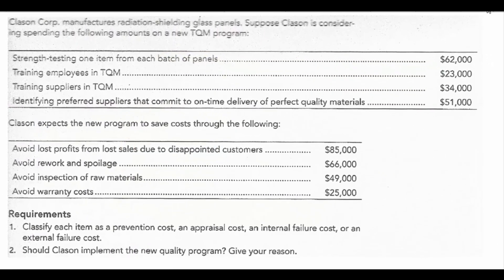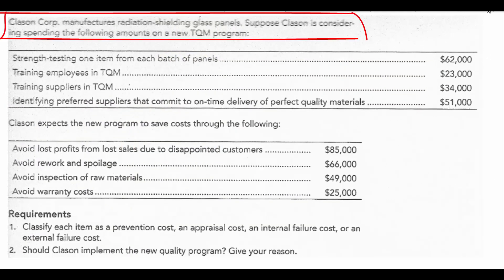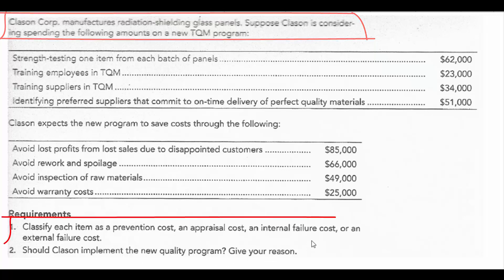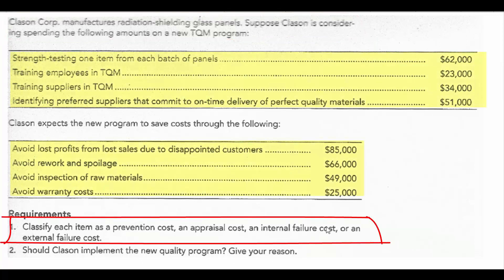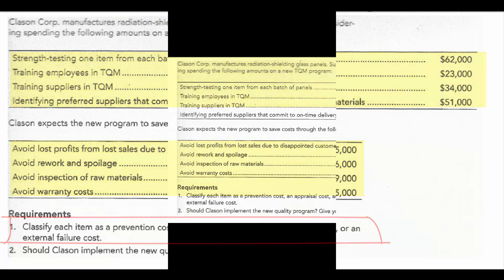Let's do this problem together about Kloss & Korp. They manufacture radiation shielding glass panels. The first thing the problem asks us to do is classify each of the eight costs as a prevention cost, an appraisal cost, an internal failure cost, or an external failure cost.